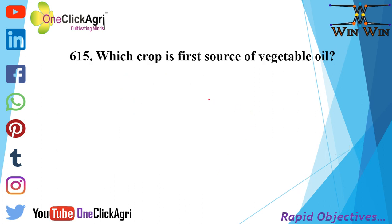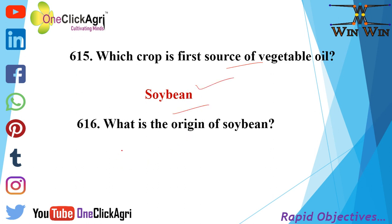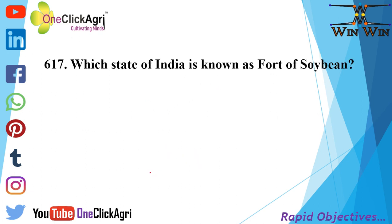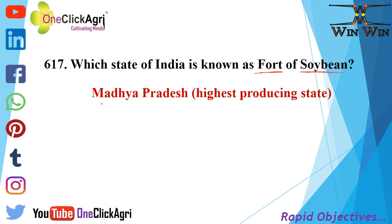Which crop is the first source of vegetable oil? That is soybean. What is the origin of soybean? China. Which state of India is known as the Fort of Soybean? That is Madhya Pradesh.